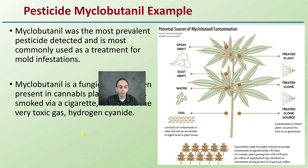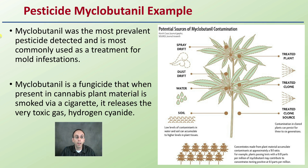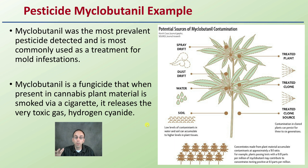Let's use myclobutanil as a quick example. Myclobutanil is the most prevalent pesticide detected and is most commonly used for the treatment of mold infestations, which sadly can be very common in cannabis plants. Myclobutanil is a fungicide that, when present in cannabis plant material that is smoked, is released as a toxic gas — hydrogen cyanide. This is why it's such a high level of concern: when ignited, it creates hydrogen cyanide. It doesn't itself contain hydrogen cyanide — when vaporized, the induced heat causes a change in chemical structure to hydrogen cyanide. Very high level of concern.